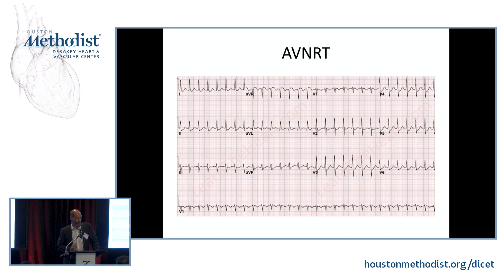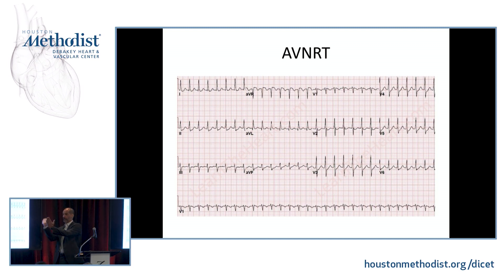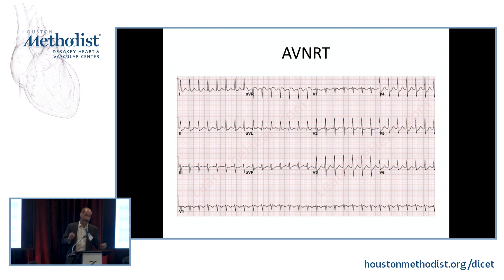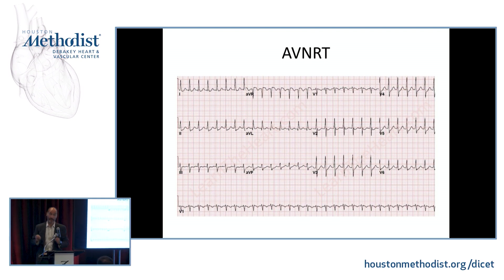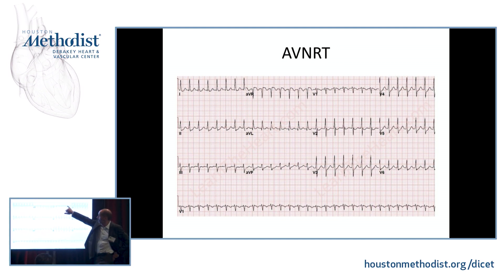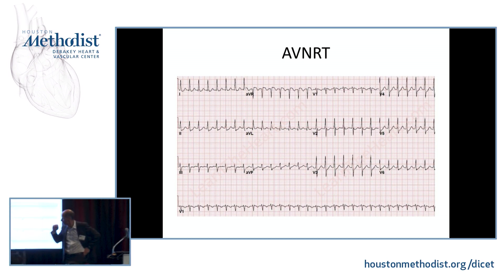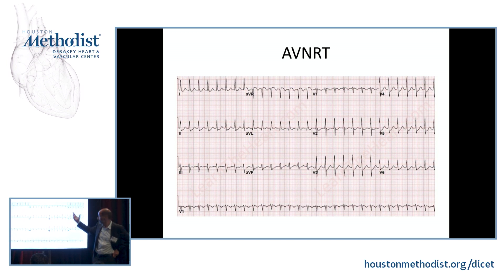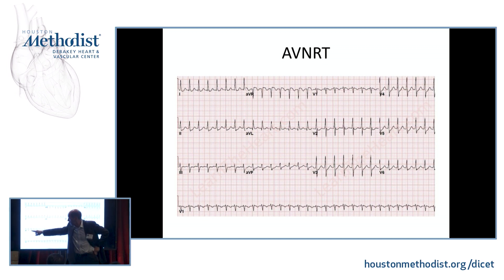How do we recognize AVNRT on the EKG? As you saw in the previous slide, electricity was going up the slow pathway and then split — one limb activated the ventricles, and in parallel, electricity went up to the atrium. So atrium and ventricles activate at the same time. That's why the P waves and QRS complexes are superimposed. You either see no P waves or a pseudo-R prime in V1, which is the retrograde P wave. Compare with the baseline sinus EKG, which would not have that pseudo-R wave.